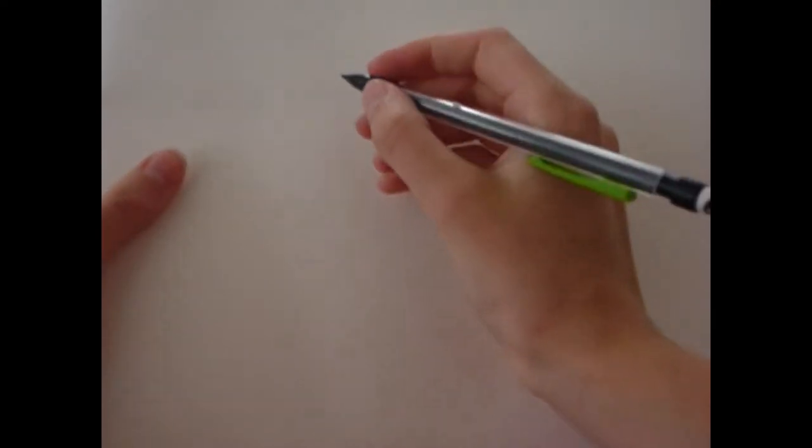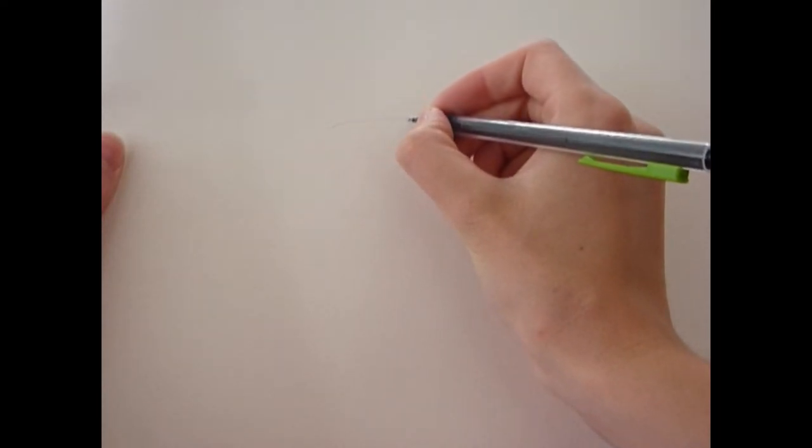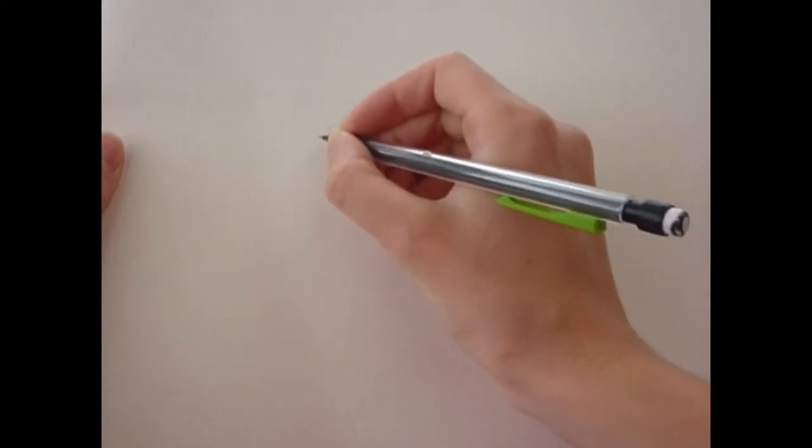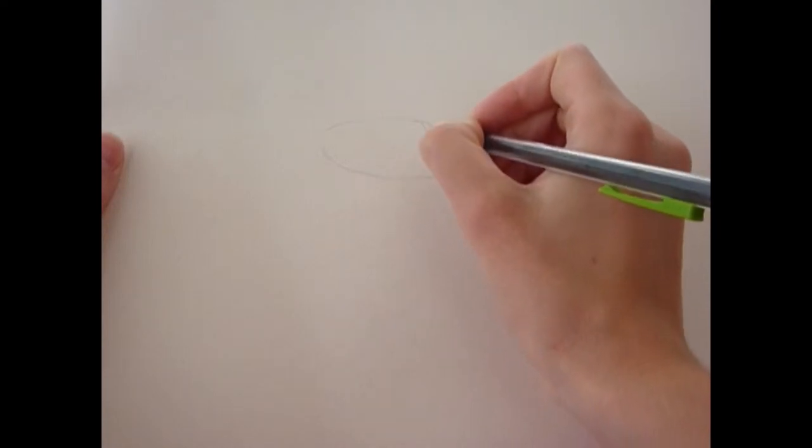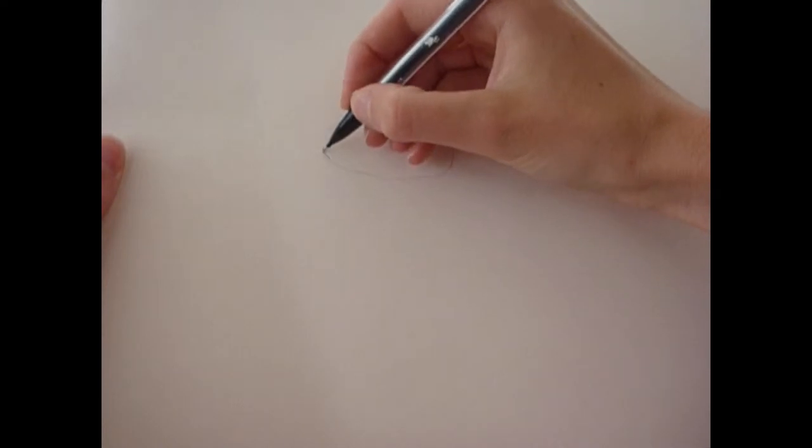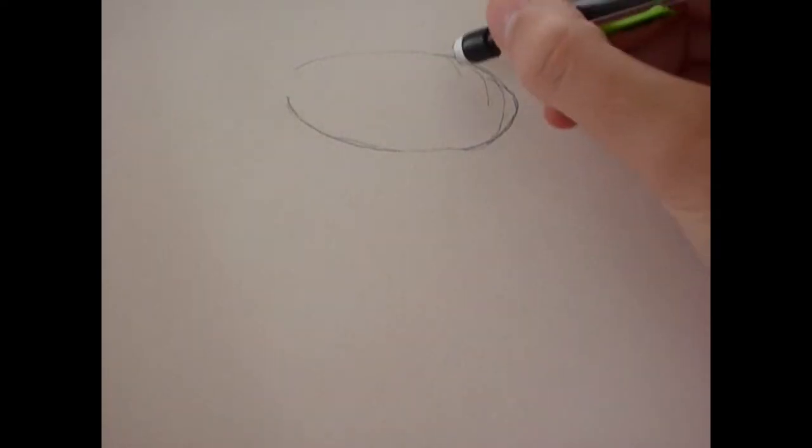Okay, so first we're going to draw an oval shape for the body. It doesn't have to be completely oval because obviously horses aren't like that. Kind of make it go up a bit here. I'm just going to put these lines out which is me getting that oval right.